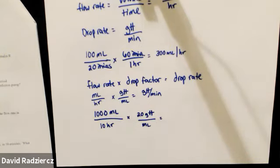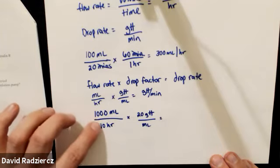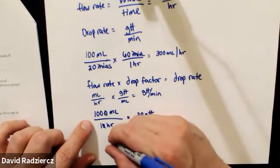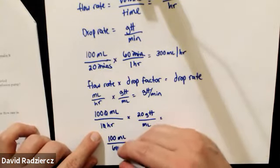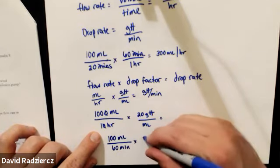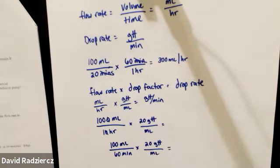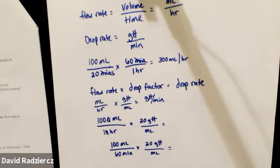There are a couple different ways to handle this question. I would reduce 1,000 over 10 by dropping the zero to get 100 milliliters per hour, then convert: 100 over 60 minutes times 20 drops per milliliter. You can also take 10 hours times 60 to get 600 minutes and do 1,000 over 600. Doing 100 times 20 divided by 60 gives 33.33 repeating.